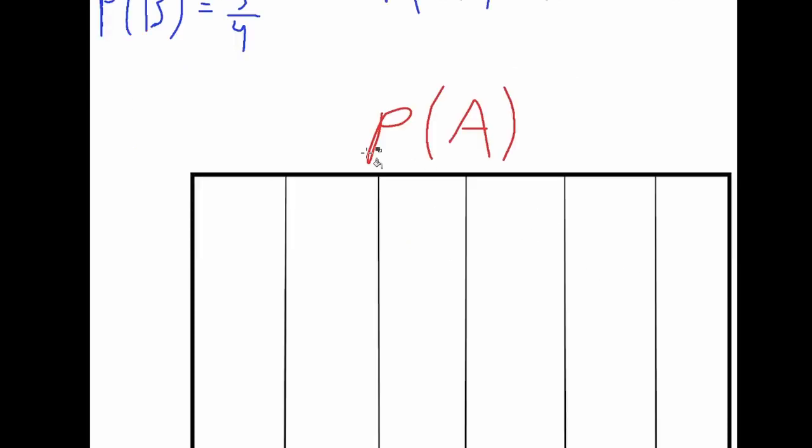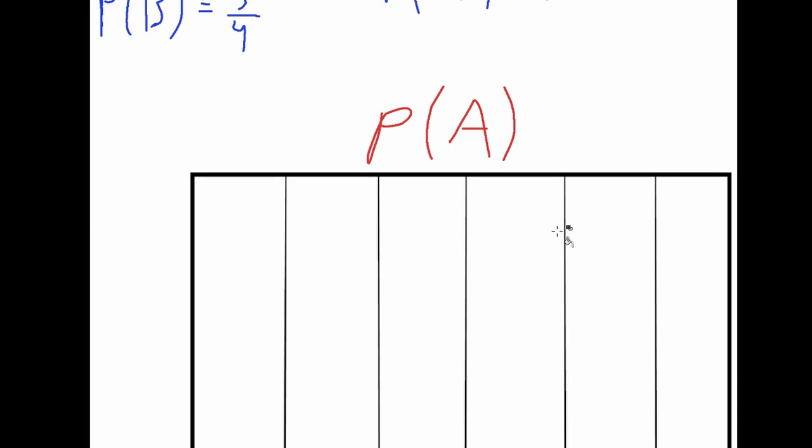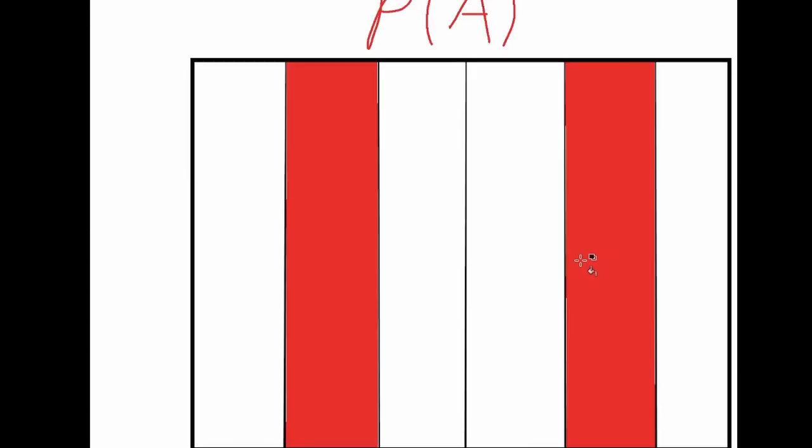Which is two sixths of all the possible outcomes of A. It could either not happen, which is in the white, or it could happen, which is in the red.